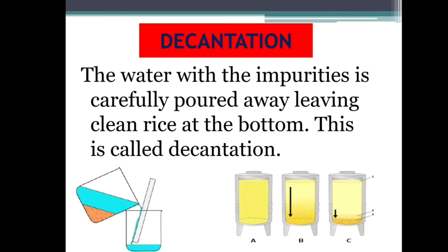The water with impurities is carefully poured away, leaving the clean rice at the bottom — this is called decantation. The same example applies to muddy water: after leaving it for some time, the mud or sand settles down, and pouring out that impure water without disturbing the mud or sand is called decantation.